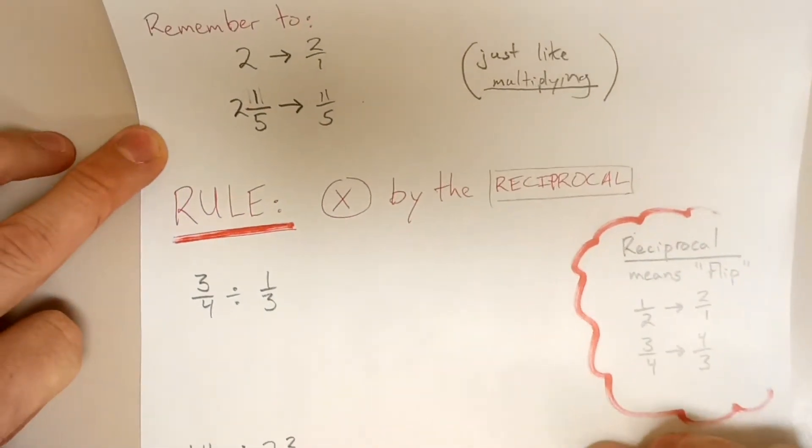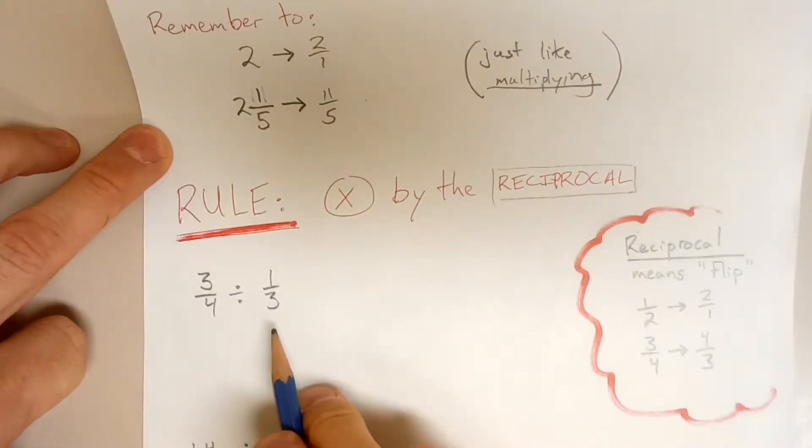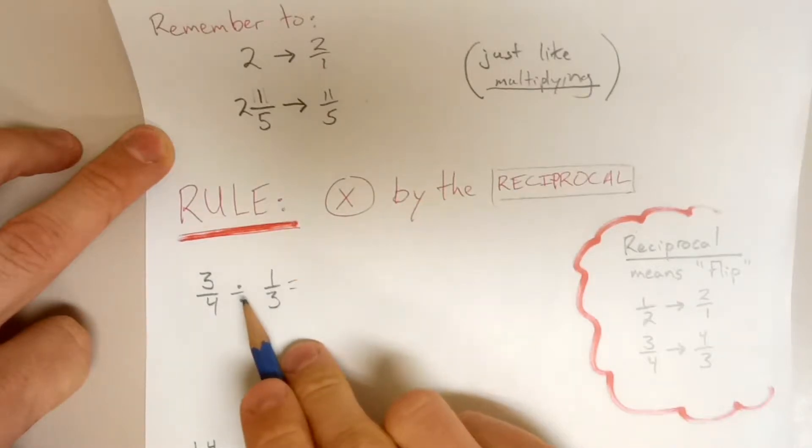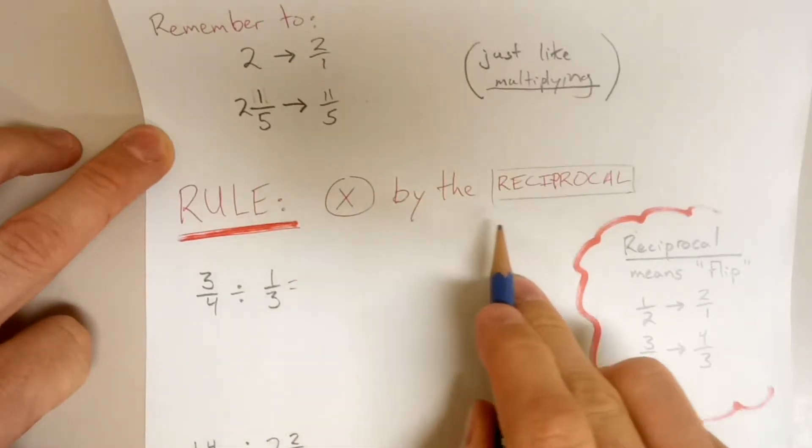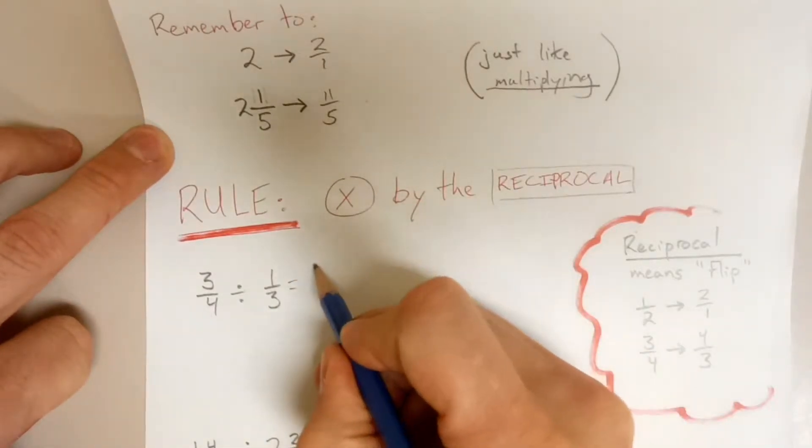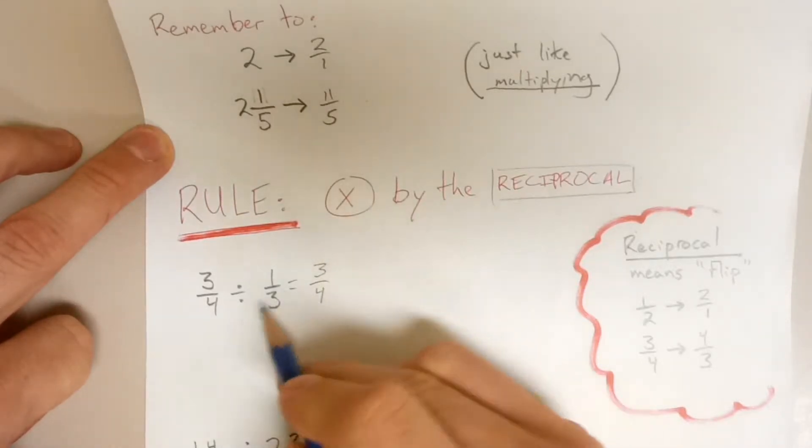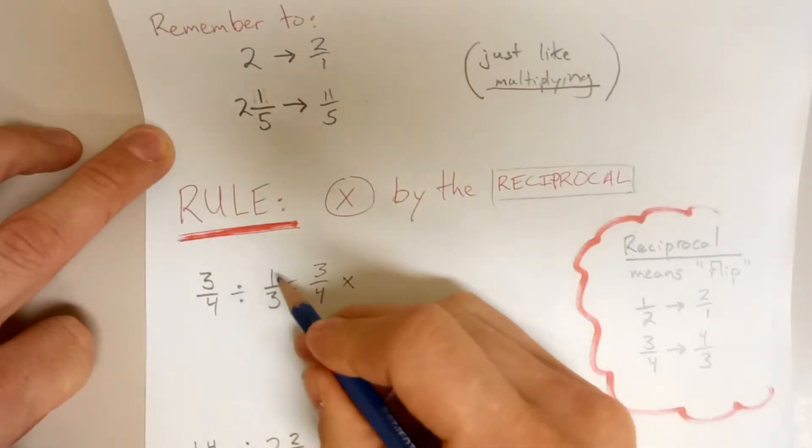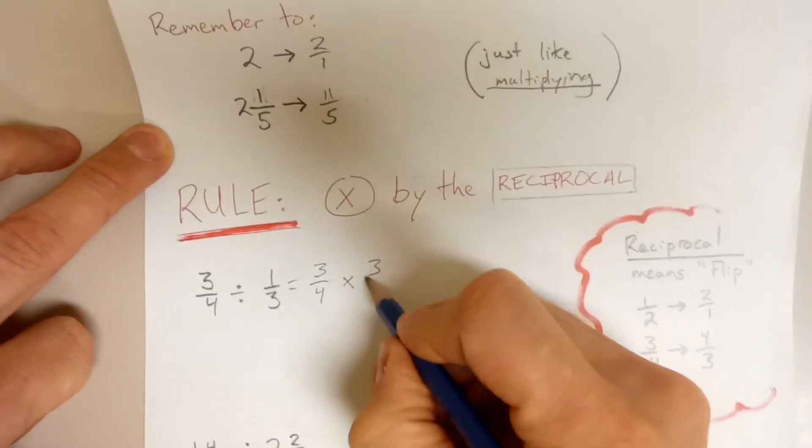So first example here, 3 quarters divided by 1 third. We're going to multiply instead of dividing, but it's going to be by the reciprocal. So the first term, the first fraction stays the same, 3 quarters. Instead of dividing we will multiply, but this then has to turn into the reciprocal, 3 over 1.